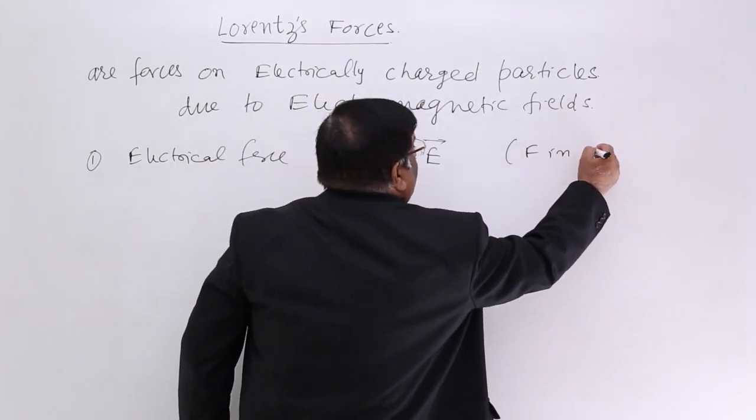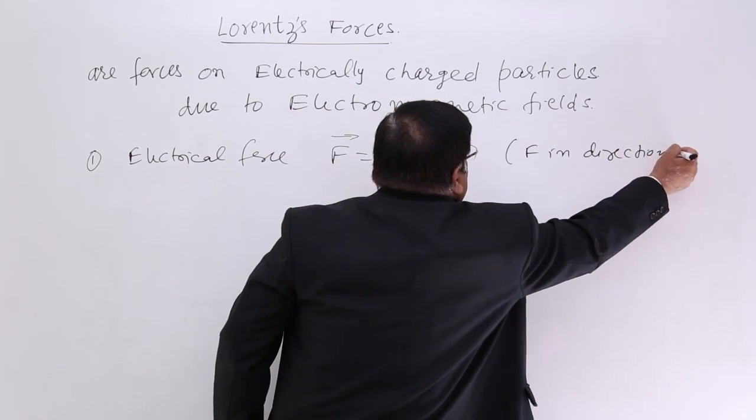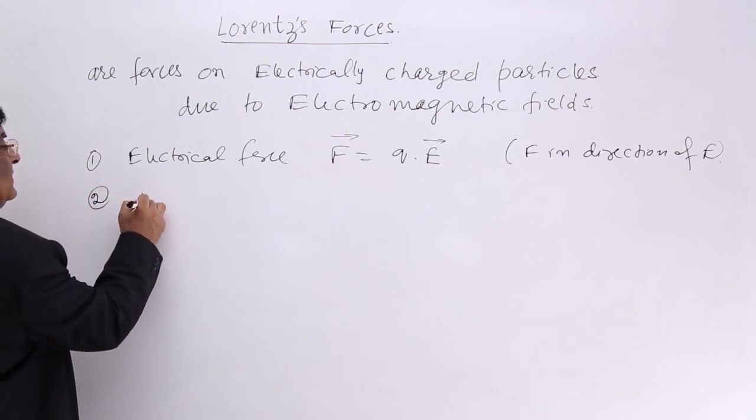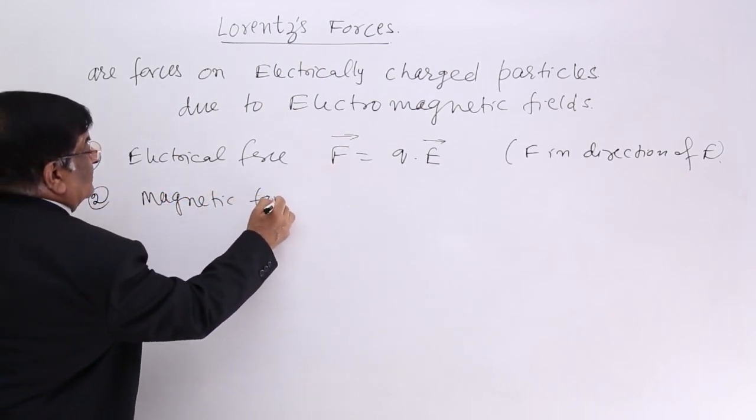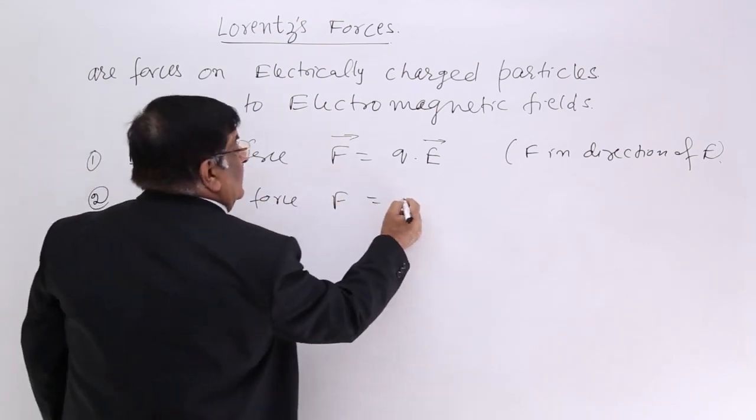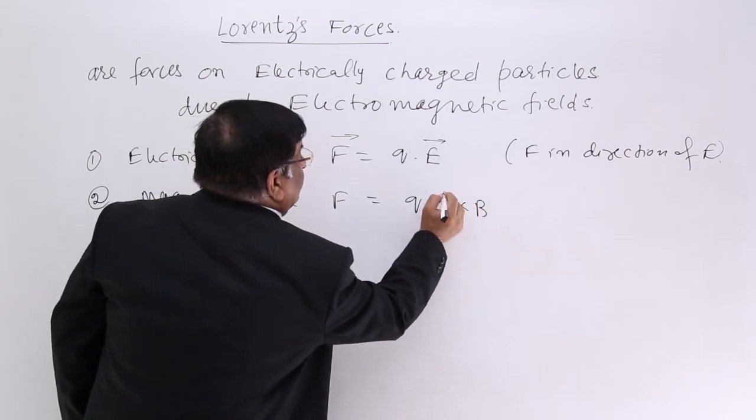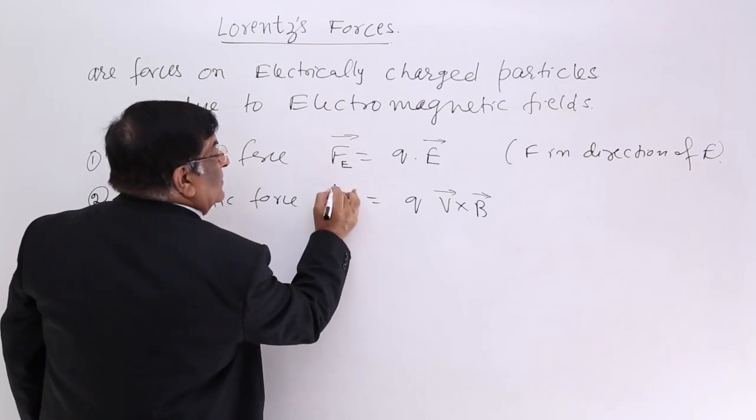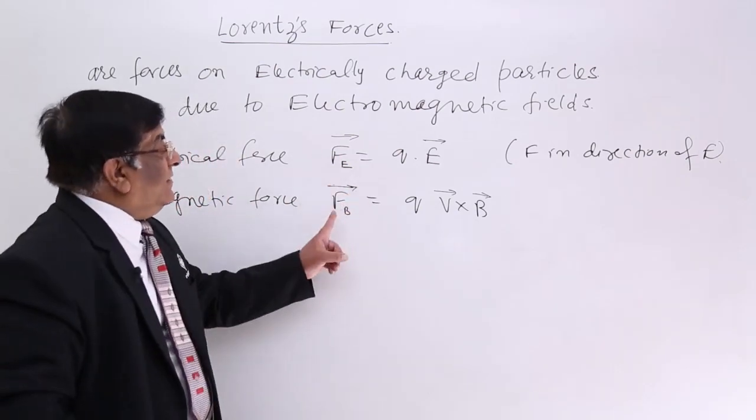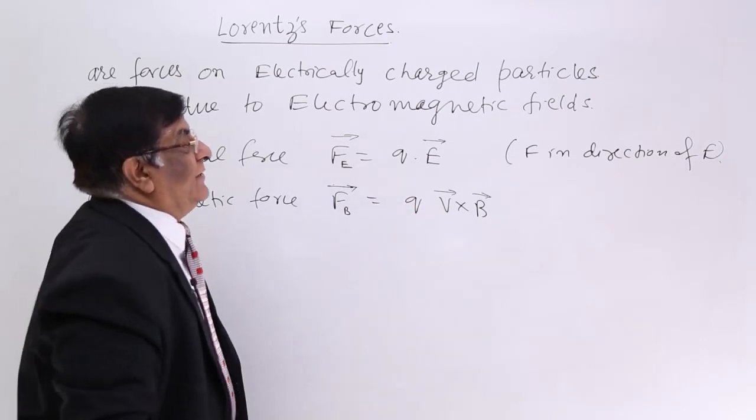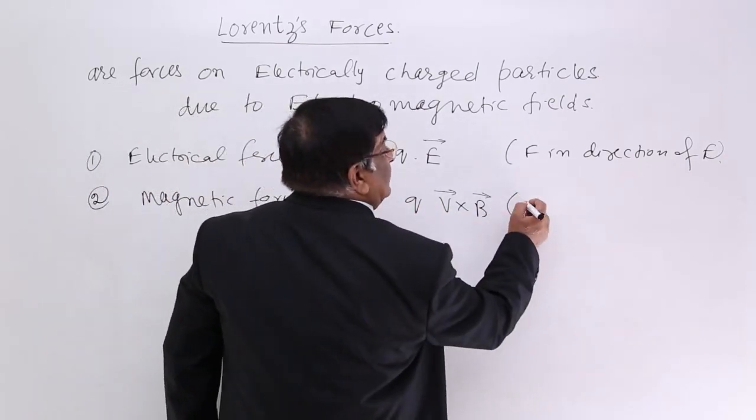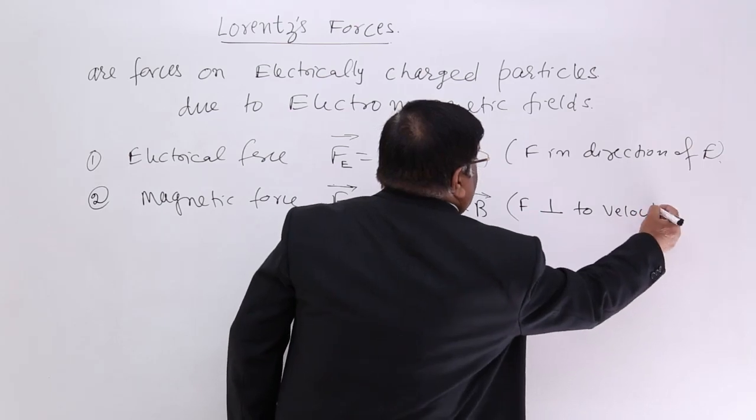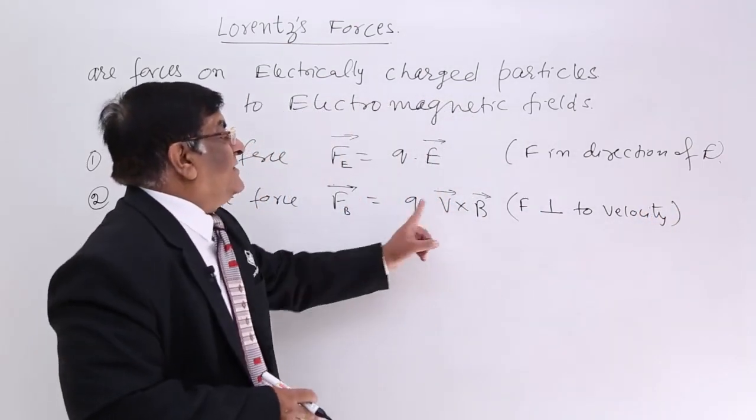The second Lawrence force is magnetic force and this magnetic force is given by QV cross B. So I will write here F electrical and F due to magnetic field. F E and FB, QV cross B and what is its direction? F perpendicular to velocity according to vector multiplication rules.